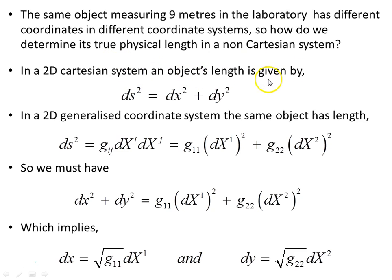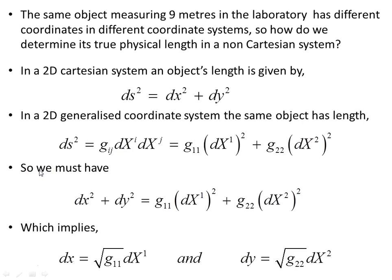In a 2D Cartesian system an object's length is given by the familiar Pythagorean relation. In a 2D generalized coordinate system the same object has the interval squared given by the metric times each of the coordinate differentials — expanding that out gives the full expression. We must have ds² the same irrespective of coordinate system, because the object doesn't change its physical length. This implies that the differential dx in the Cartesian system equals the square root of g11 times dx1, and likewise for dy.